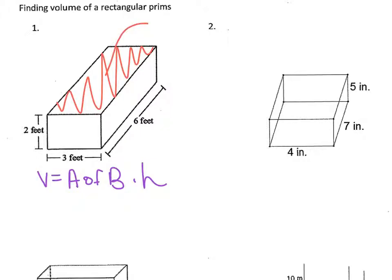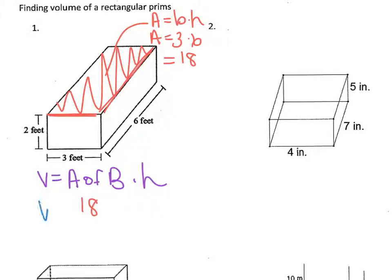Since the top is a rectangle, the formula is area equals base times height. The base of this rectangle is parallel to 3, so that's 3. And the height is parallel to the side that measures 6, so that's 6. And 3 times 6 is 18. So, the area of the base in this figure is 18.